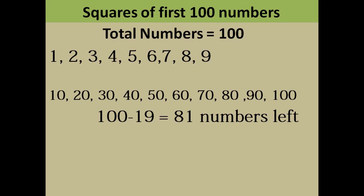So actually for the first hundred numbers you have to learn 81 numbers because you already know the squares of these 19 numbers which are written above. So you are left with 81 numbers. Now we'll start the method.